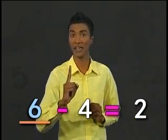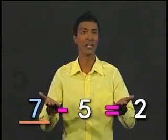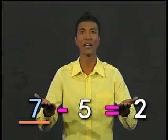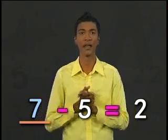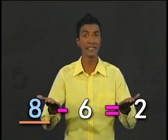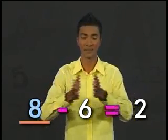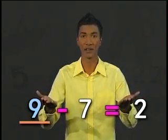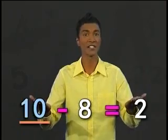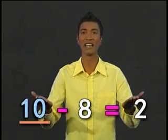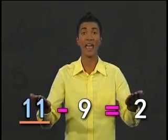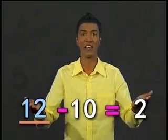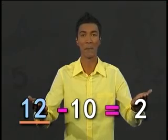After that, it should be 7. 7 minus 5 equals 2. And then 8 minus 6, followed by 9 minus 7. Next will be 10 minus 8, and then 11 minus 9, and finally 12 minus 10.